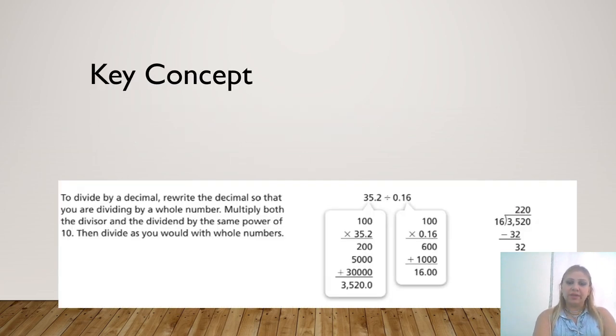This is a summary for the main points in our lesson. So this is the key concept. To divide by a decimal, rewrite the decimal so that you are dividing by a whole number. Multiply both the divisor and the dividend by the same power of 10. Then divide as you would do with the whole numbers.